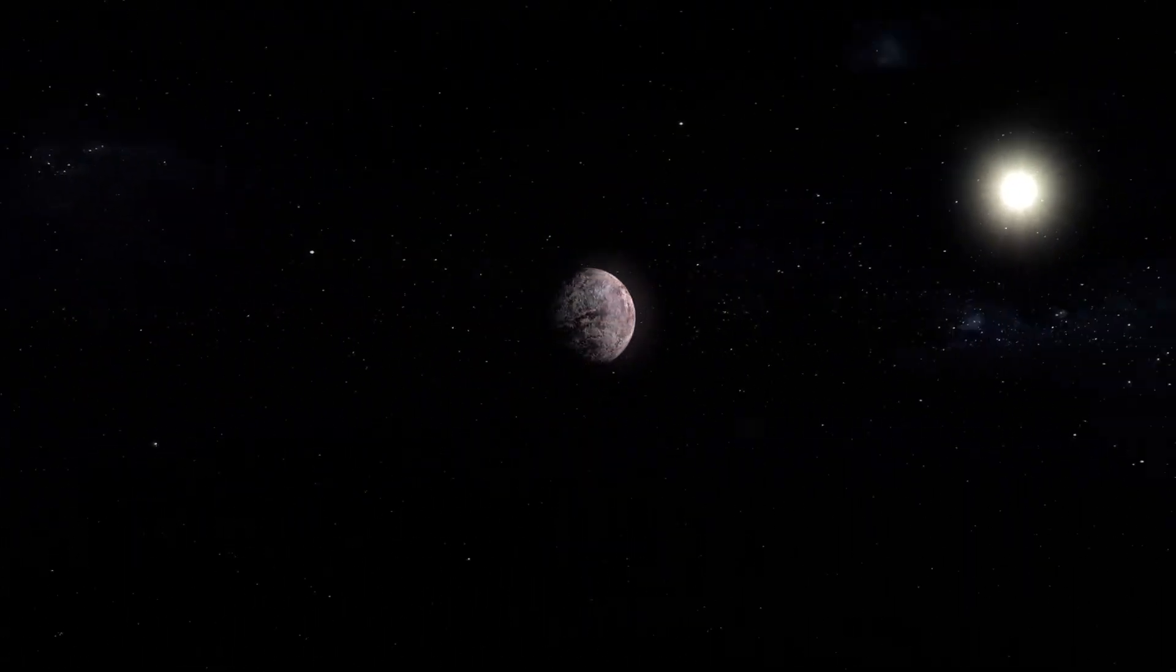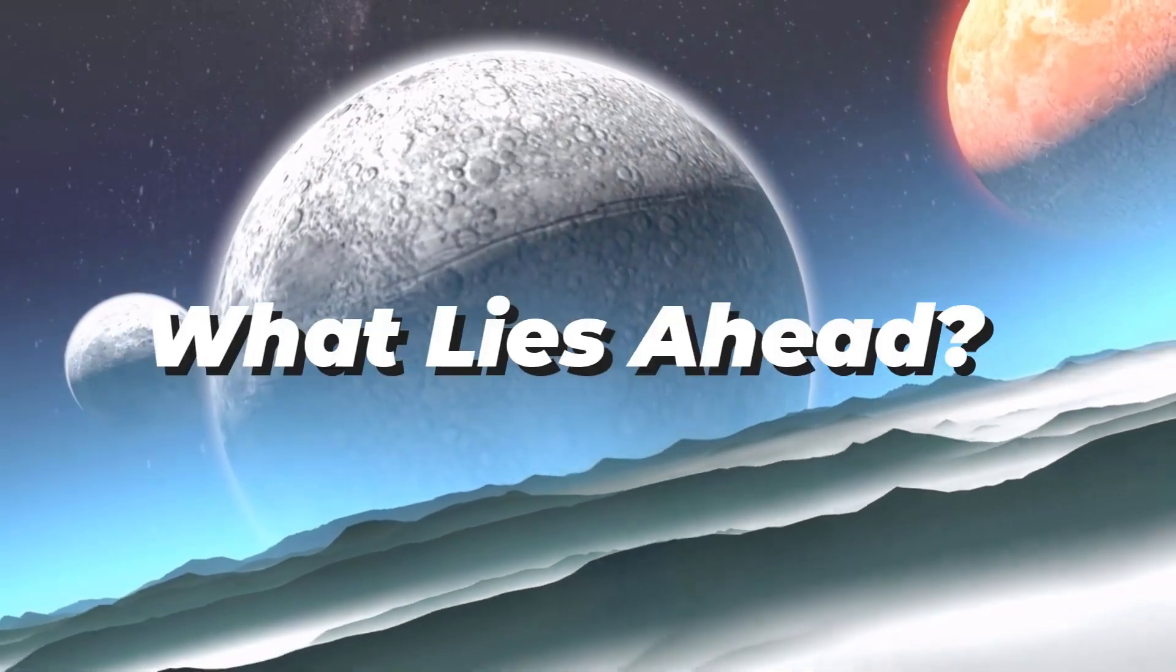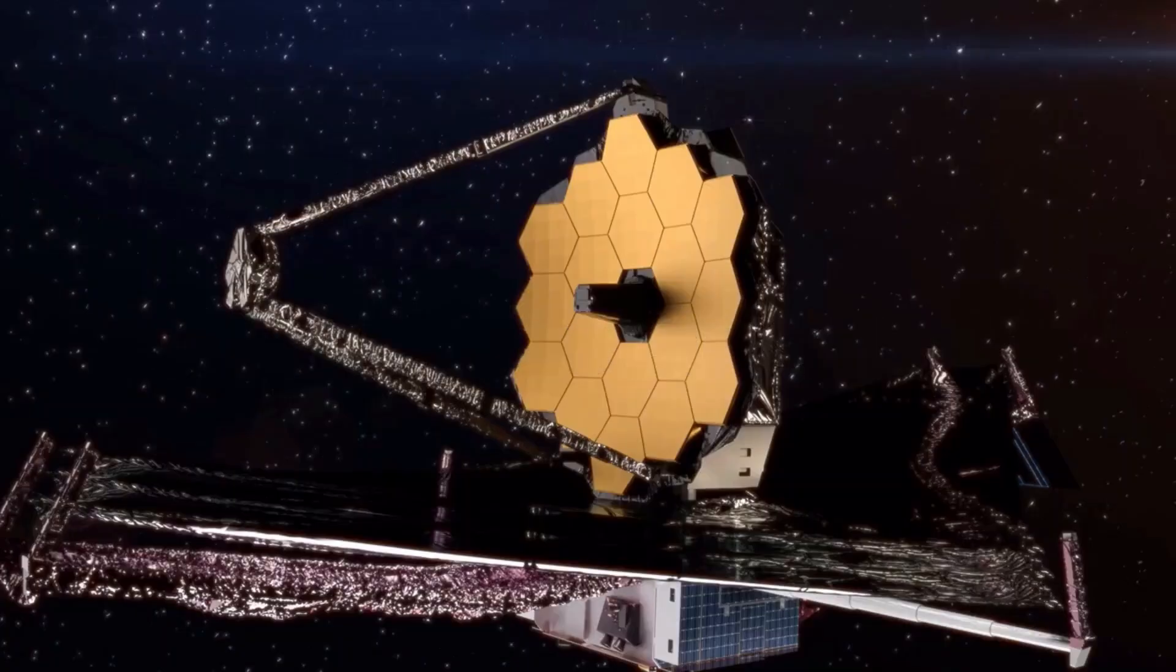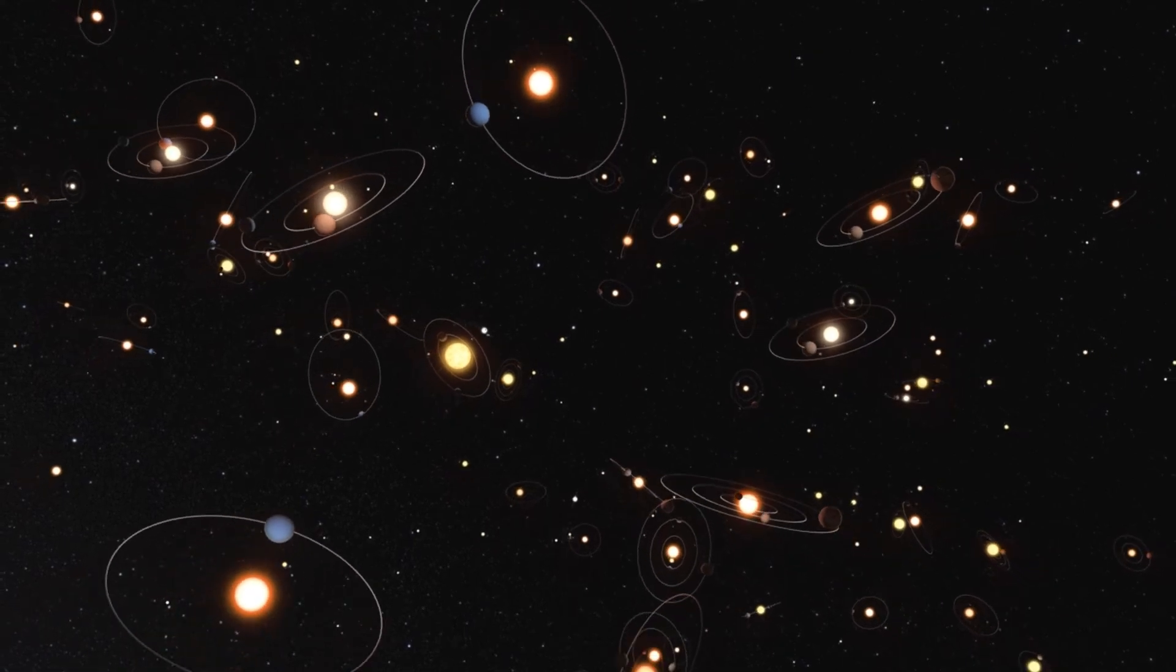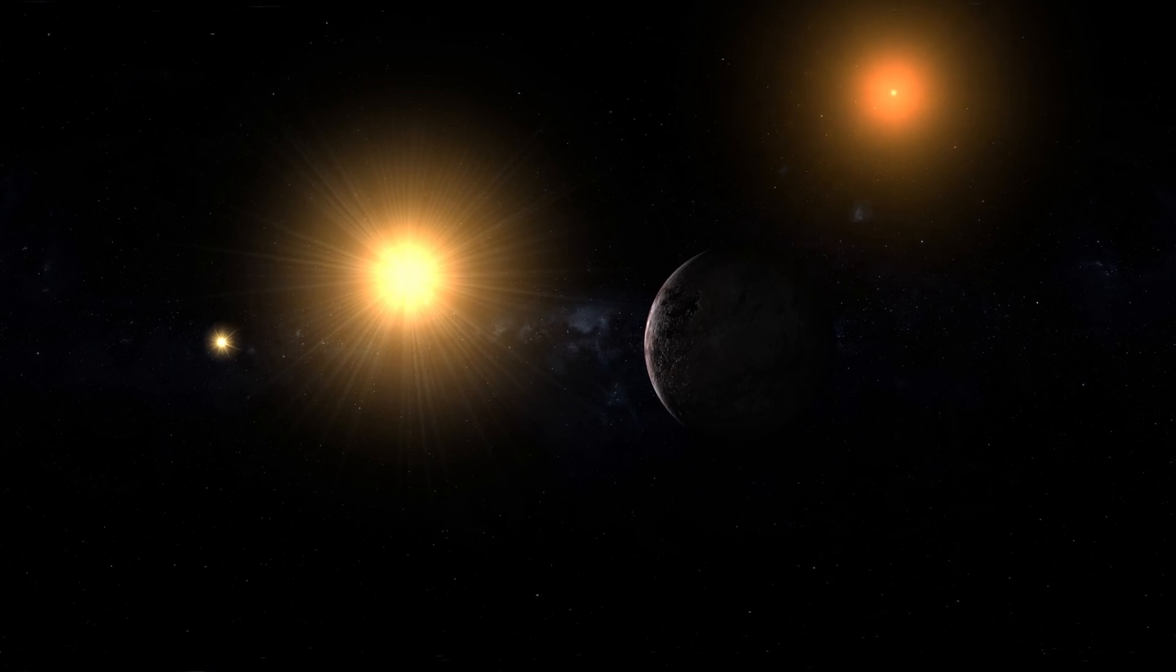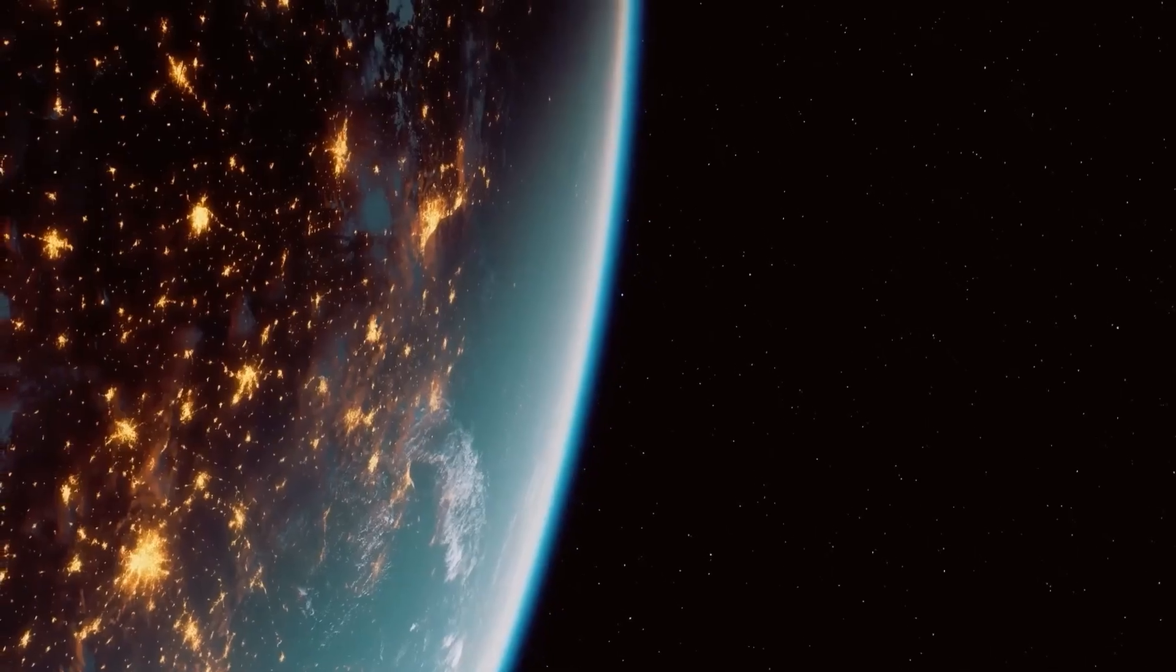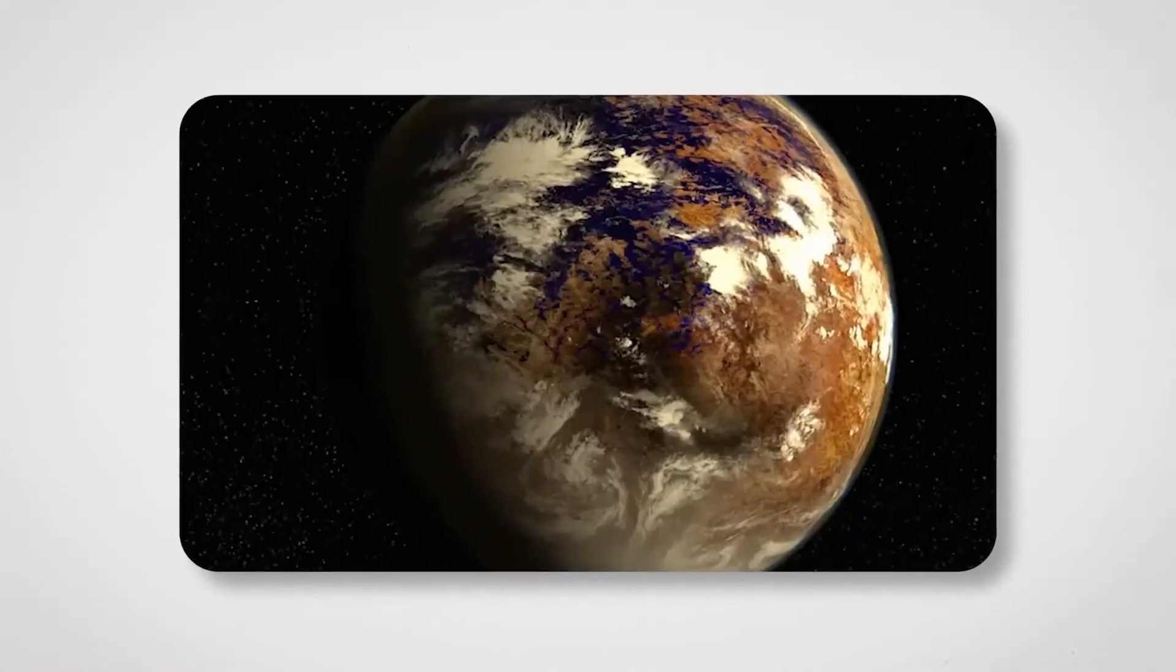Galaxies themselves are a mess of unanswered questions. We've got the basics down, clouds of gas collapse, stars are born, black holes grow, but the details are maddeningly unclear. Why do some galaxies look like spirals while others are just blobs? And what's the deal with supermassive black holes sitting at the center of nearly every galaxy? Are they puppeteers pulling the strings of galaxy formation or just side effects of the cosmic chaos?